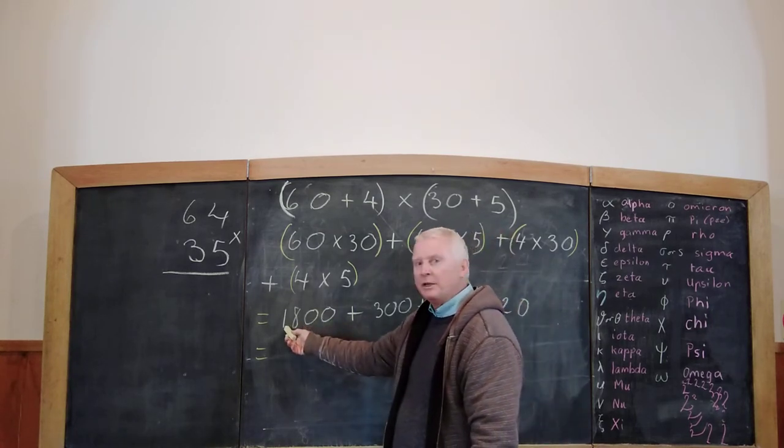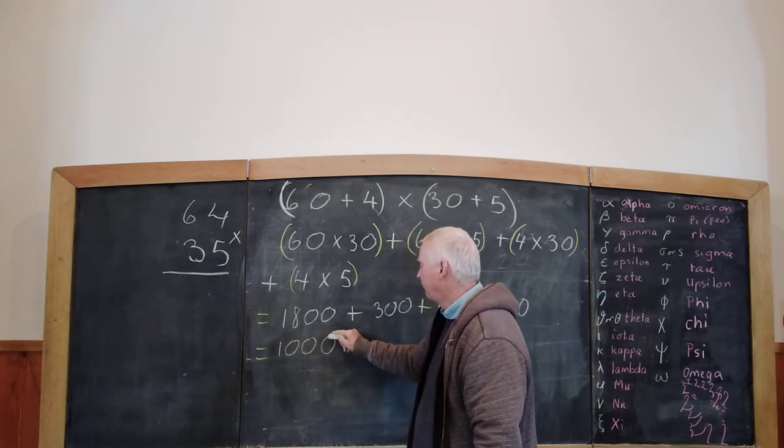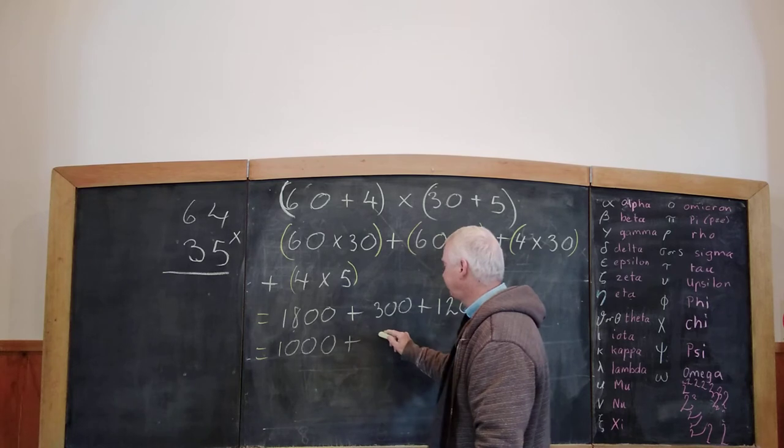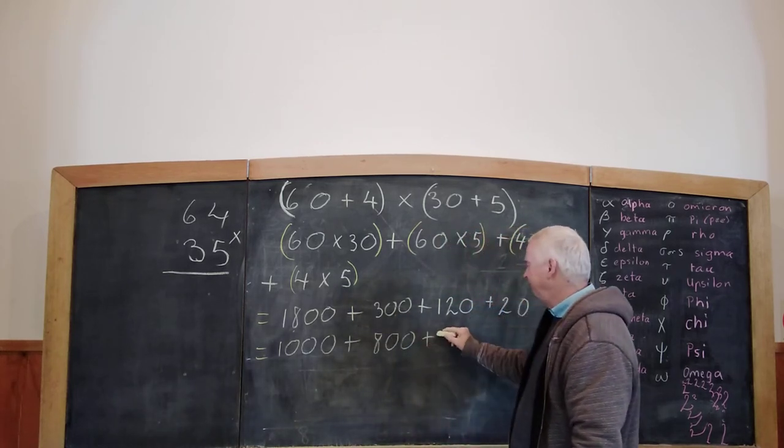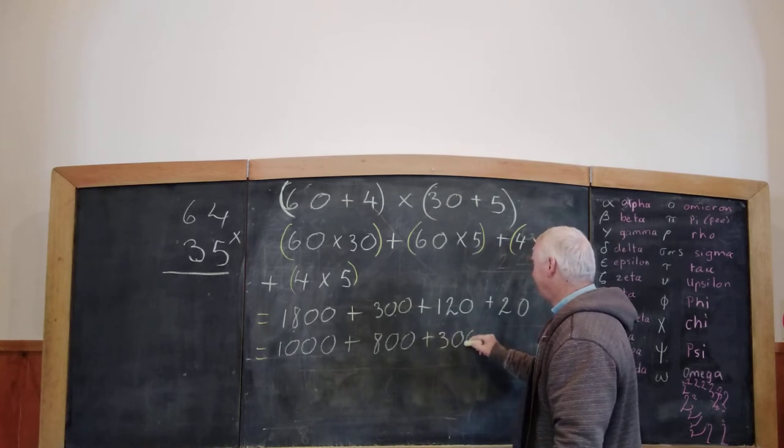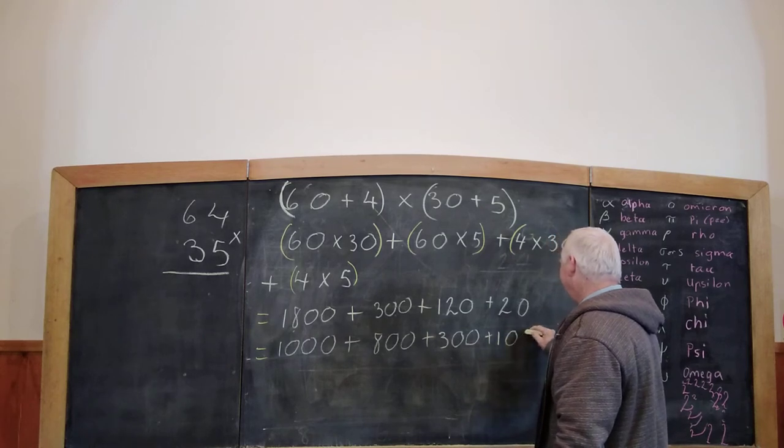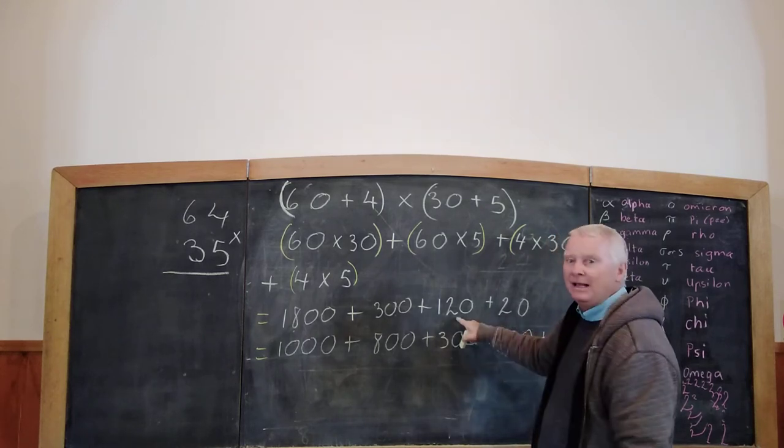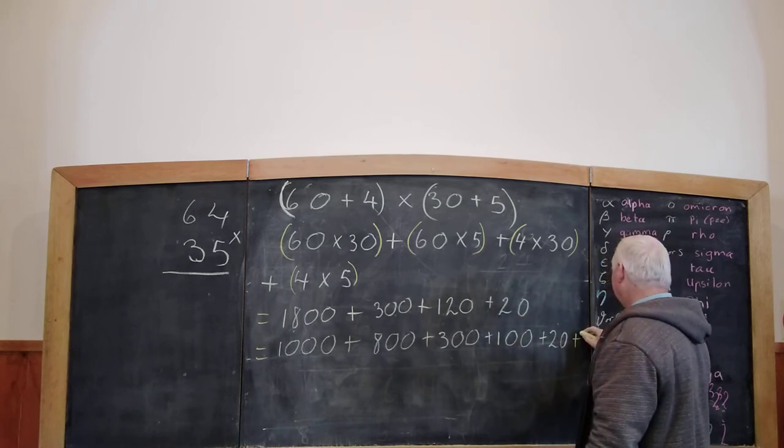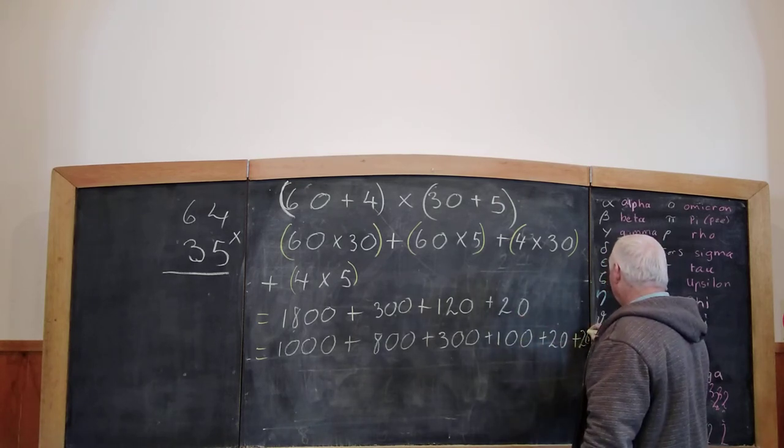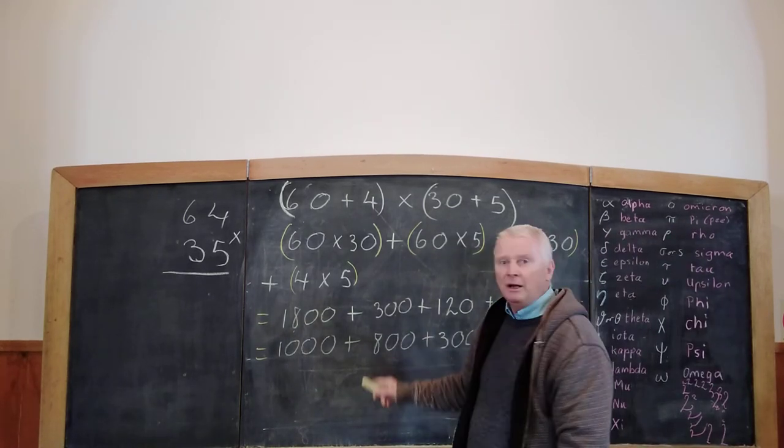So, we have to expand this number. So, that's 1000 plus 800 plus 300 plus 100 plus 20 plus 20 plus 20. I'll try and squash it in there. You can see squashed in. So, now we group like numbers.